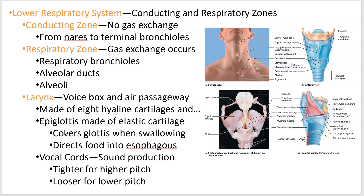The epiglottis is that flappy bit here — this is an actual dissected specimen — it's like a little lid that covers your glottis, which is the opening to the trachea. Every time you swallow, you don't want food going down the trachea; you want it diverted behind the trachea into the esophagus. The vocal cords are straps of elastic tissue — when relaxed they produce a deep noise, and when tightened they produce a high-pitched noise. That's how you change pitch.